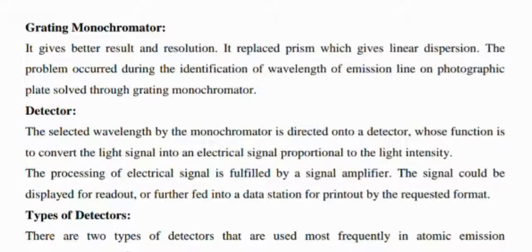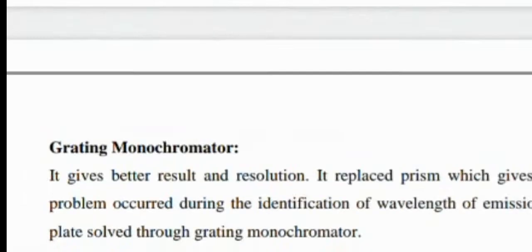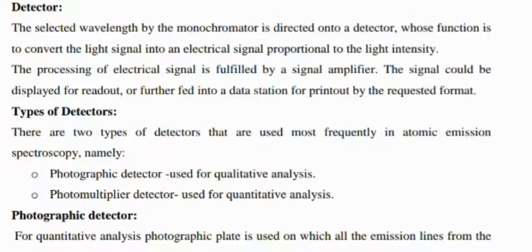Further, we have a detector. The selected wavelength by the monochromator is directed into the detector, whose function is to convert the light signal into an electrical signal proportional to the light intensity.